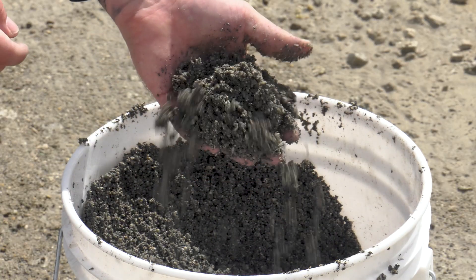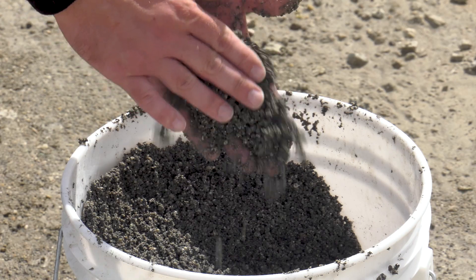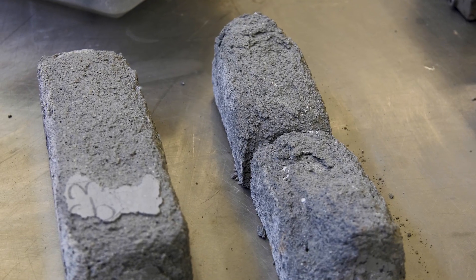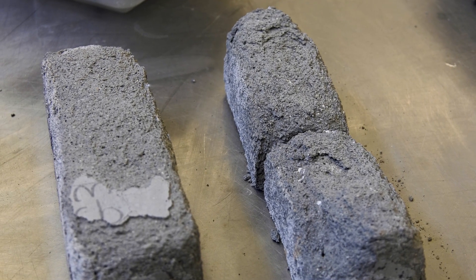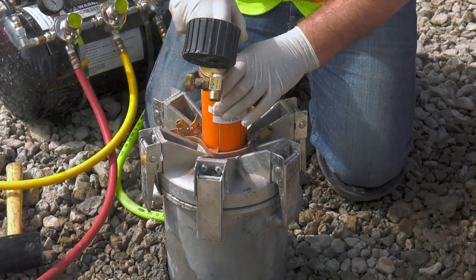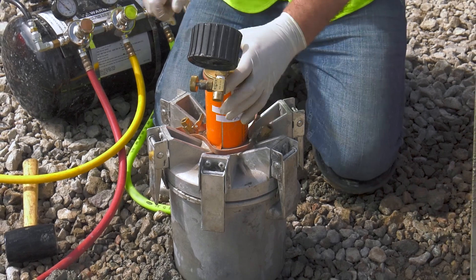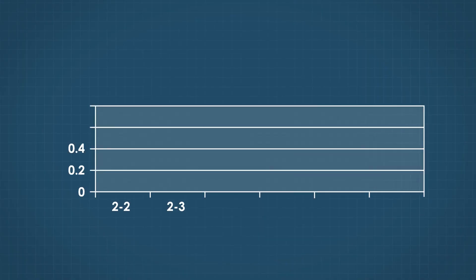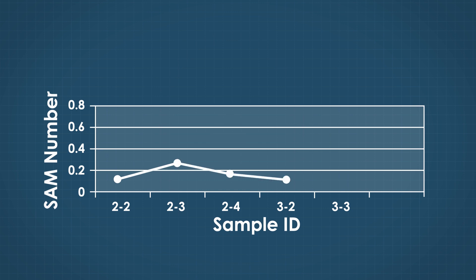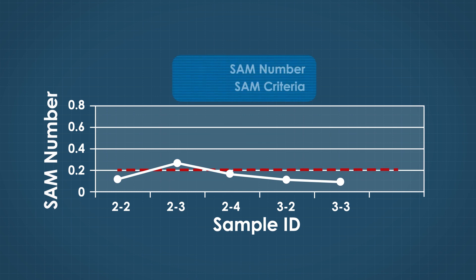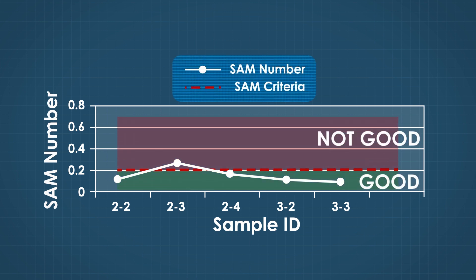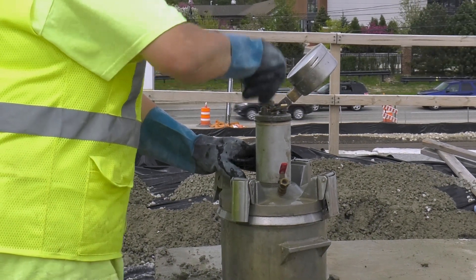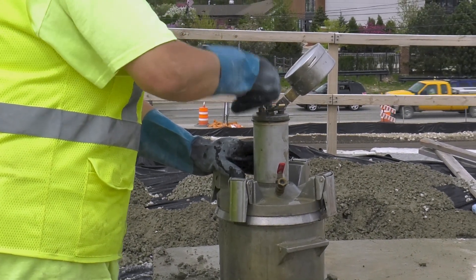The advantage of the new test is it better characterizes the air system in concrete, giving a much better indicator of freeze-thaw durability. Some aggregates will crack or expand when saturated and subjected to repeated freezing and thawing cycles, which deteriorates the concrete and impacts durability. The super air meter test measures the air void system in fresh concrete under a series of high pressures and provides the SAM number, which is a measure of air system quality and freeze-thaw performance expectations.